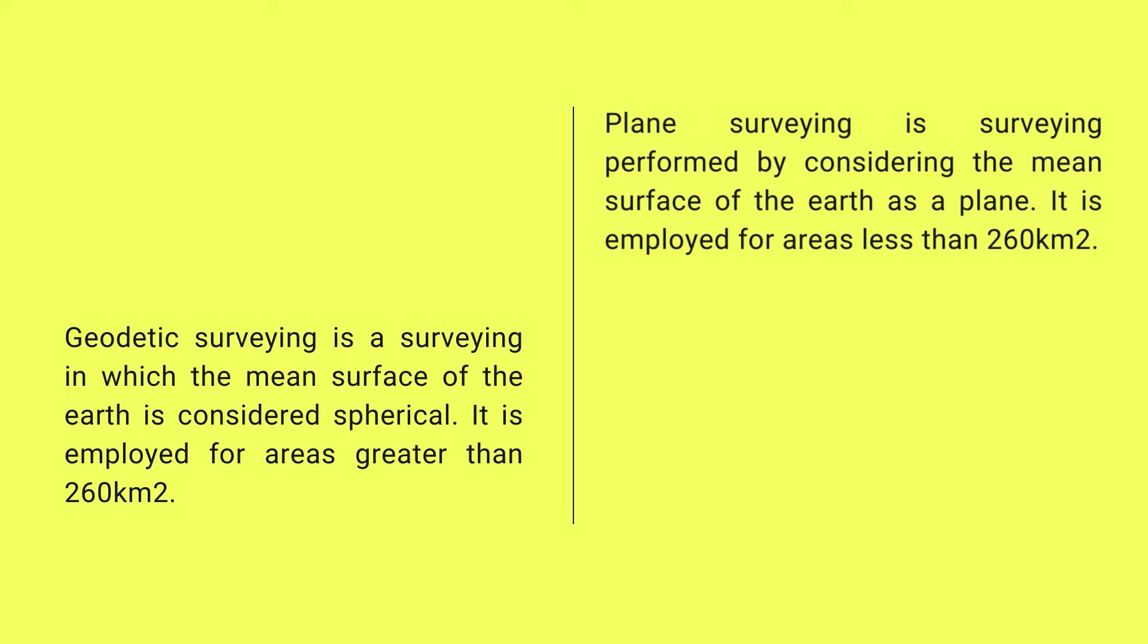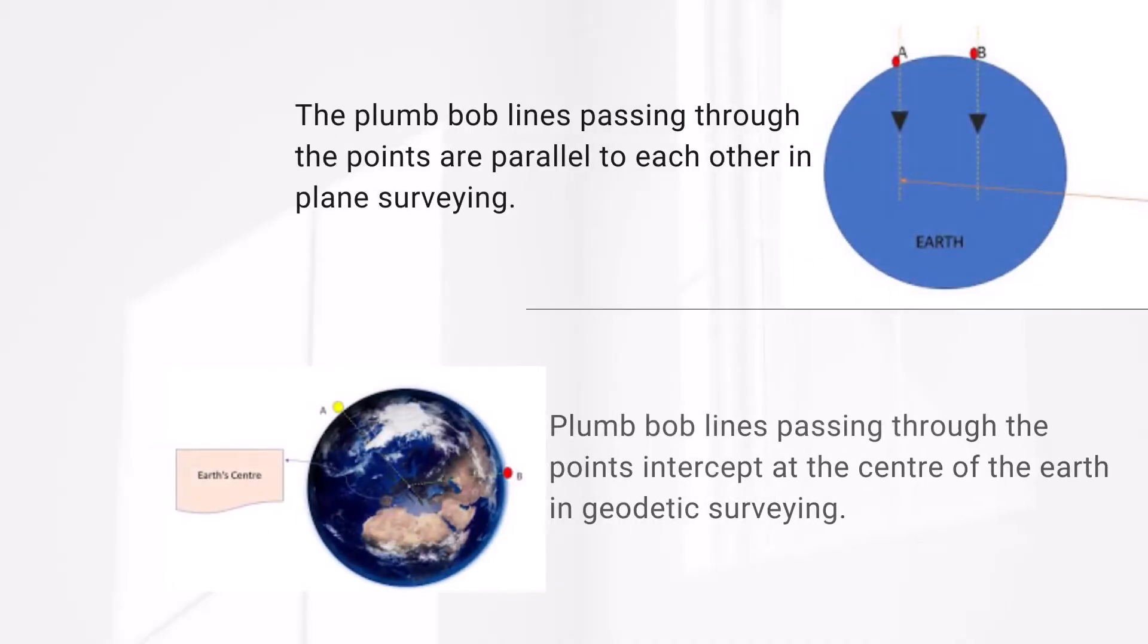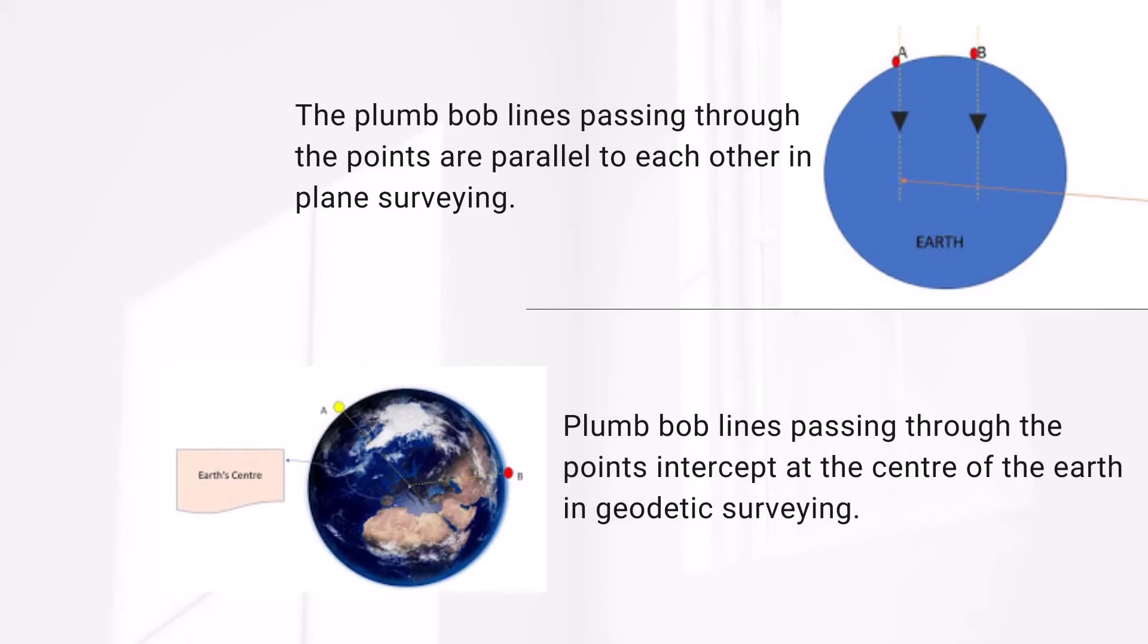The plumb bob lines passing through the points are parallel to each other in plane surveying, while these lines intercept at the center of the earth in geodetic surveying.